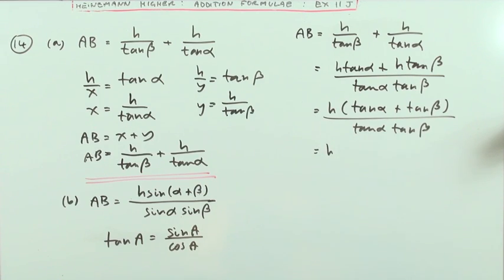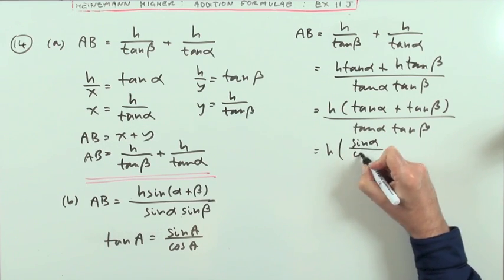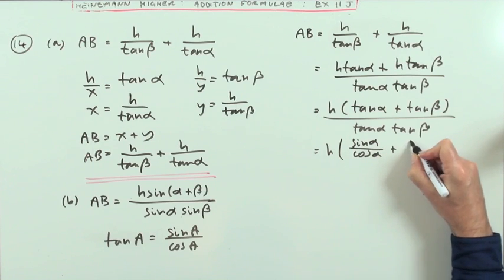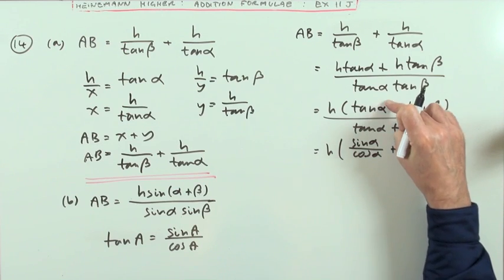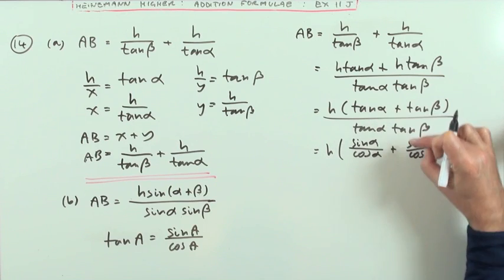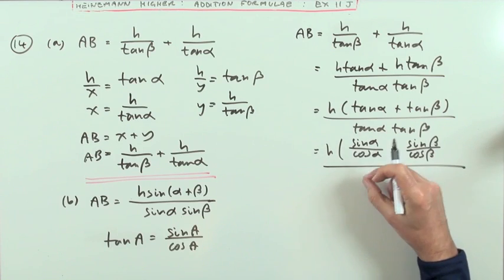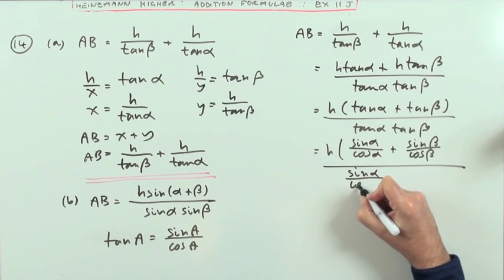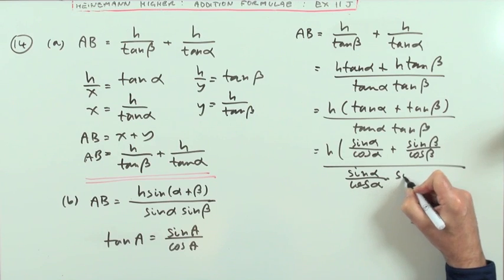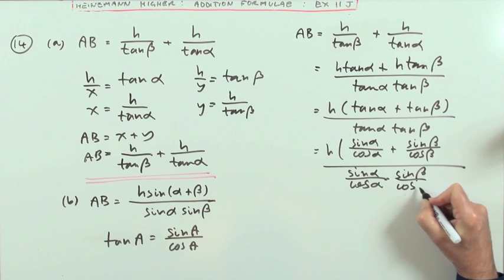So it's going to get a little bit cumbersome for a while. I've got h times - now the top's going to have to be sin alpha over cos alpha plus sin beta over cos beta. That's the tangent split into sin over cos. And the same on the bottom: that tangent will have to get split into sin alpha over cos alpha times the tan beta, sin beta over cos beta.